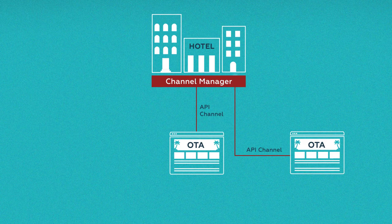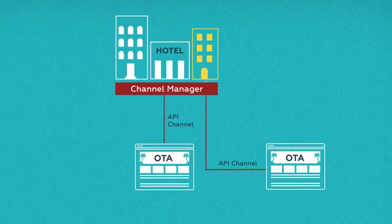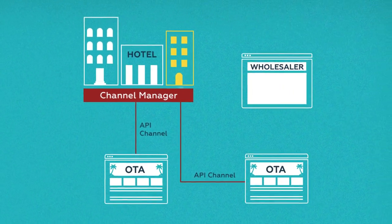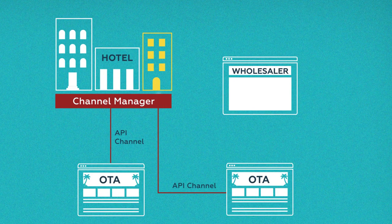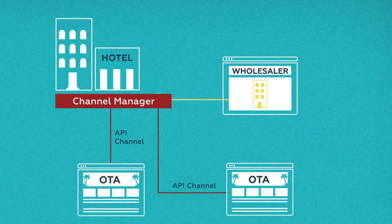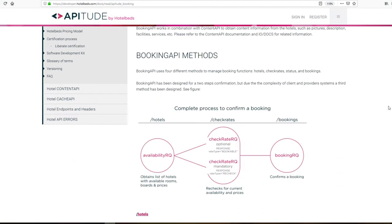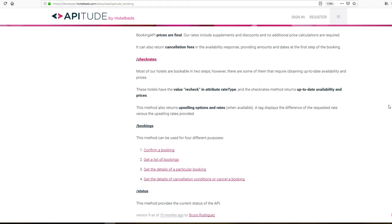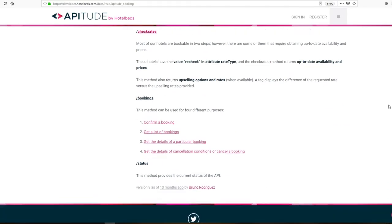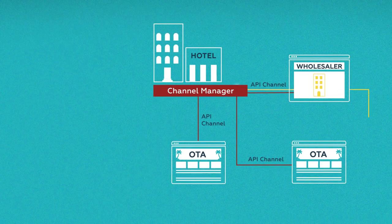Direct connection to online travel agencies isn't the only way hotels distribute their rooms. To keep a property filled to capacity, a hotelier can sell some rooms in bulk to wholesalers or bed banks for a lower cost. For example, Hotel Beds, one of the largest bed banks, provides its Hotel Connect APIs for hotels, including their property managers, and API-to-OTA APIs for travel agencies.